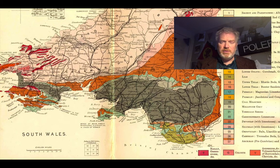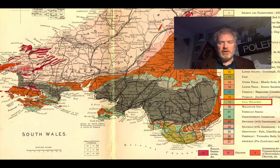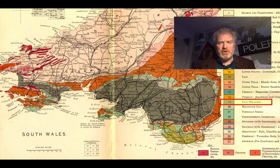In terms of time, the coal-bearing rocks are found in a unit we call the coal measures, which is right at the top of the Carboniferous period. So it's the last episode of the Carboniferous before the Permian really kicks in.